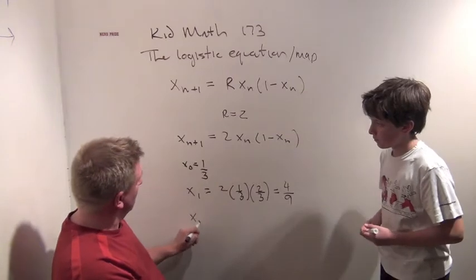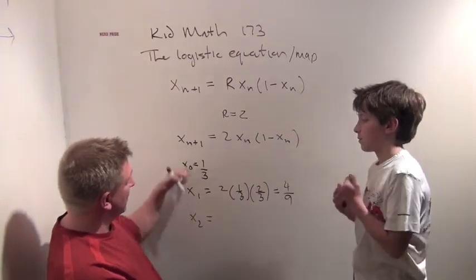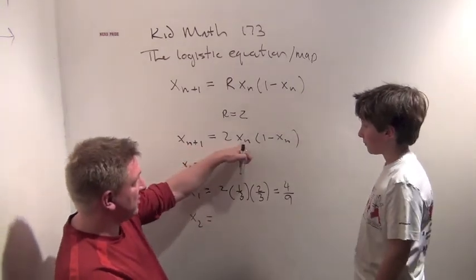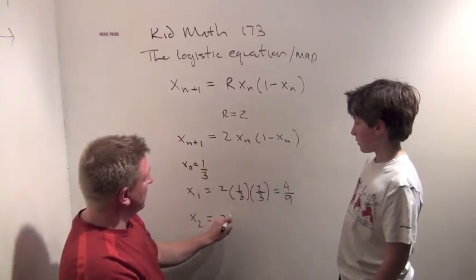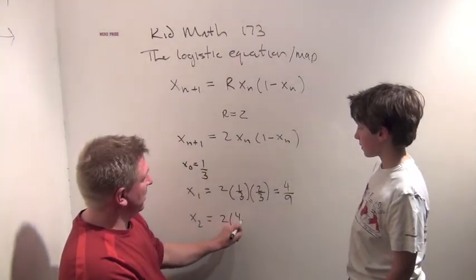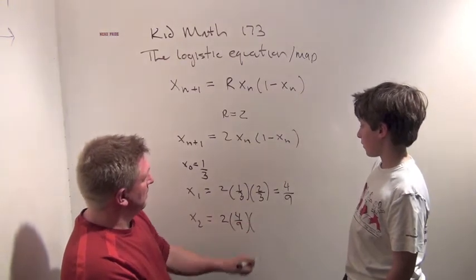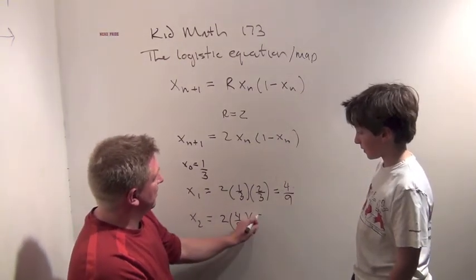Now we can use x1 to create x2. x2 is going to be 2 times x1 times 1 minus x1, or 2 times 4 ninths times 5 ninths.